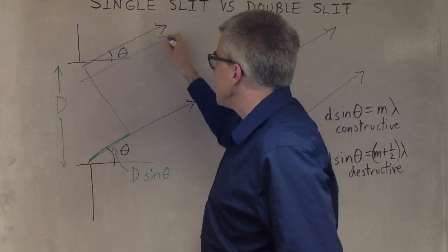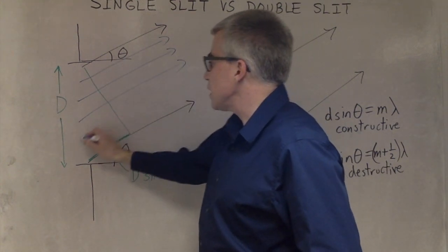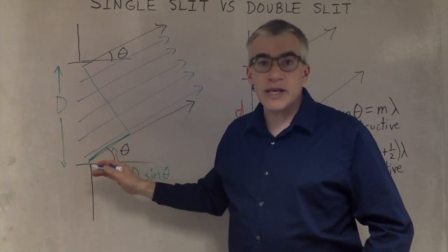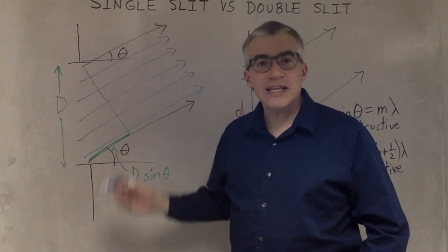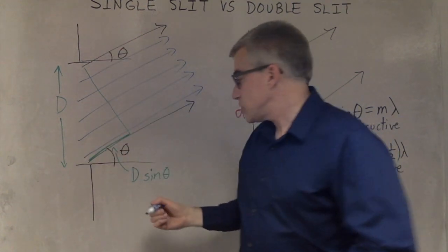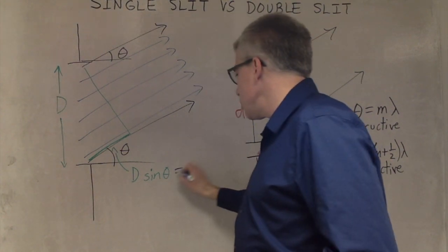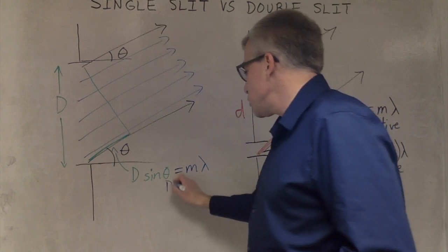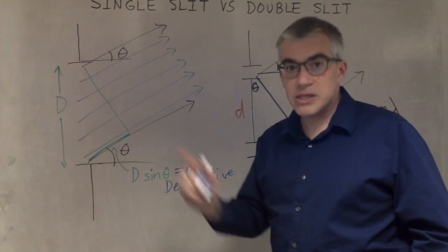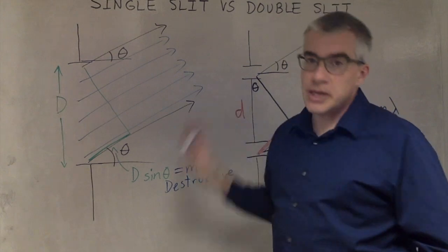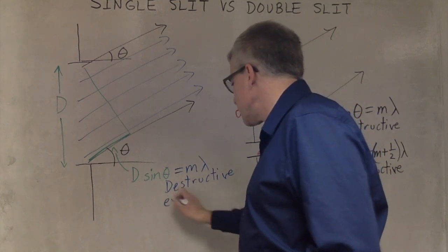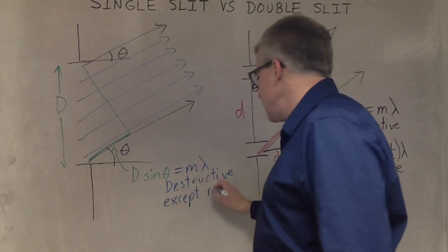When you add up this wave, and this wave, and this wave, and so on — if these are one entire wavelength or a whole number of wavelengths apart, you're going to get destructive interference, because you have every possible phase and they all cancel each other out. So D sin theta equals m lambda will be destructive, unless m is 0, because if m is 0, the light's going straight through and you get a maximum — all the light is in phase hitting the middle. So except m equals 0.